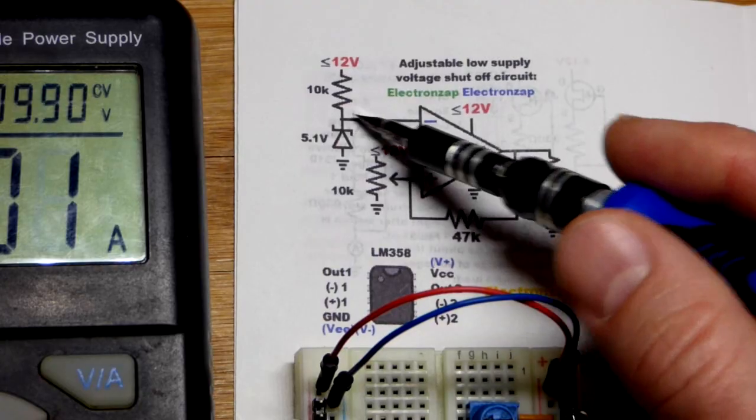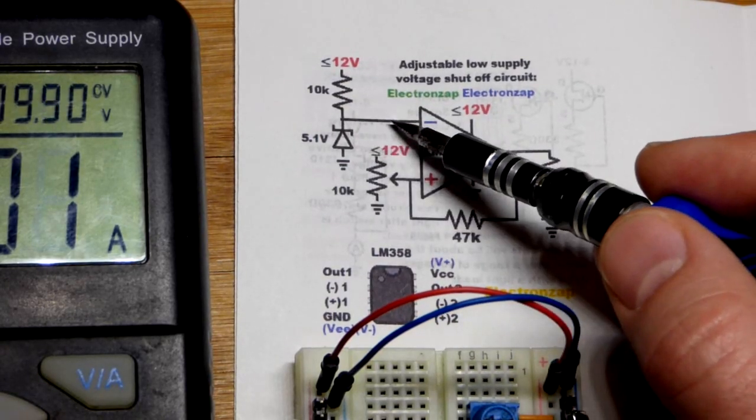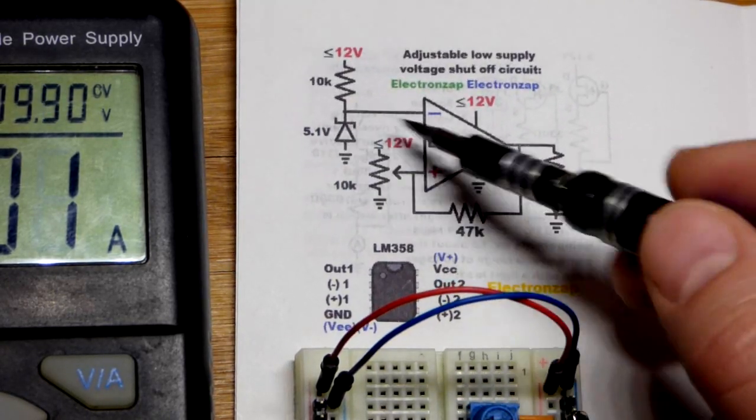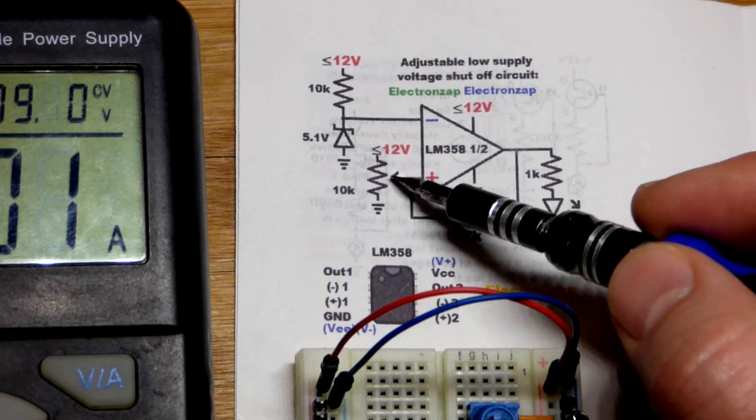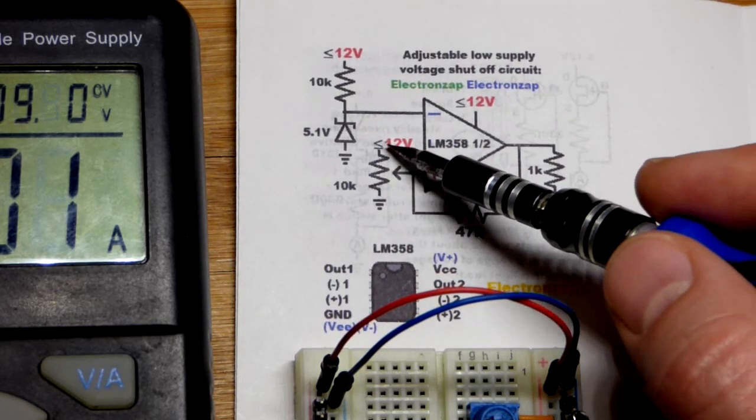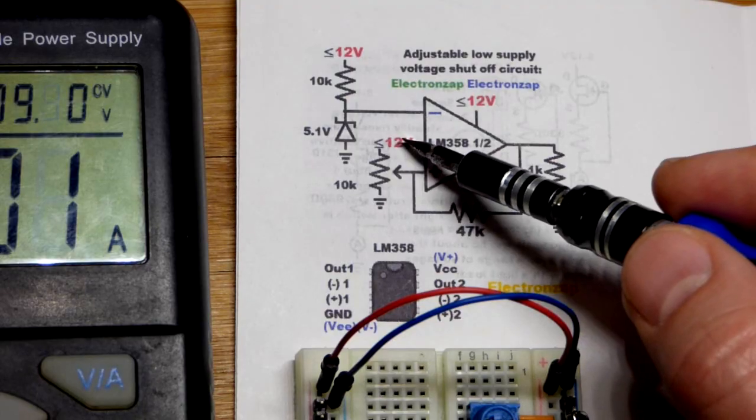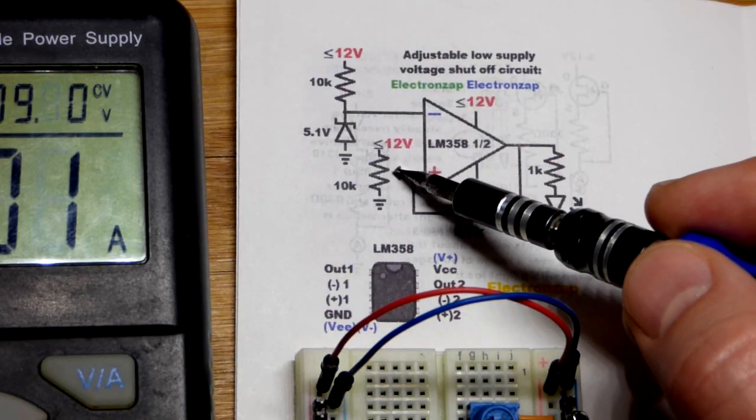We have a moving voltage because the supply voltage will be changing. This one will be pretty rock steady at 5.1 volts. If we want 10.2 volts where it switches, then we could set it halfway because at 10.2 volts, half of that will be 5.1 volts.